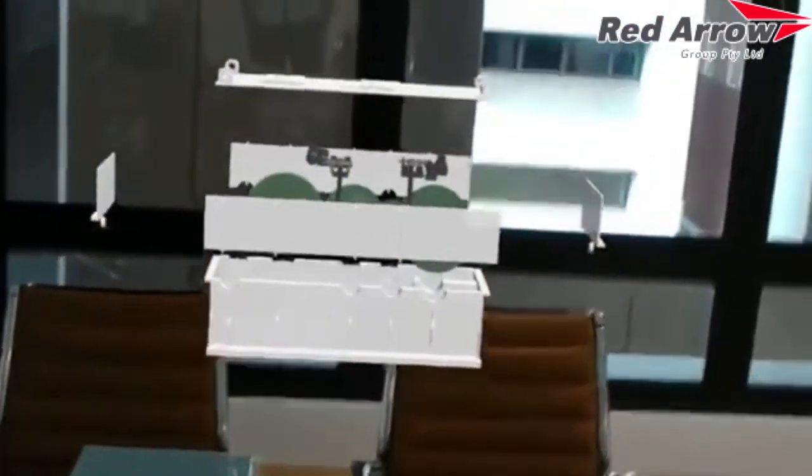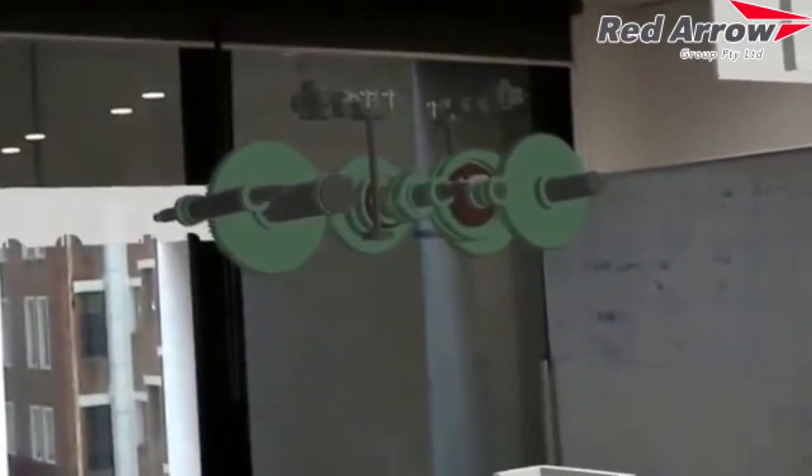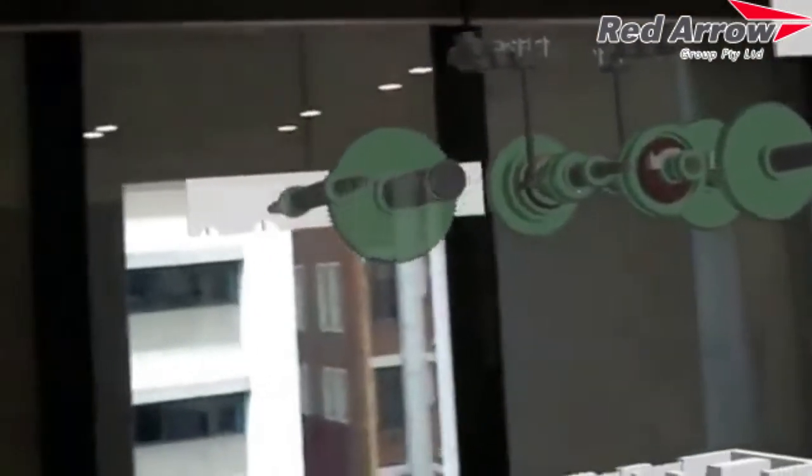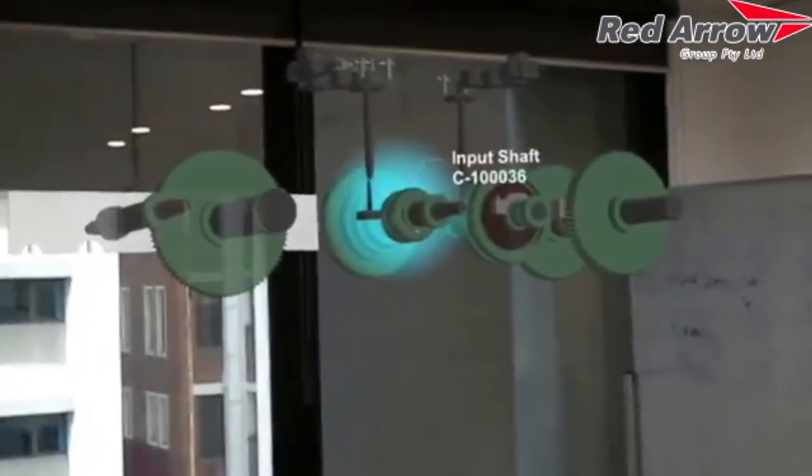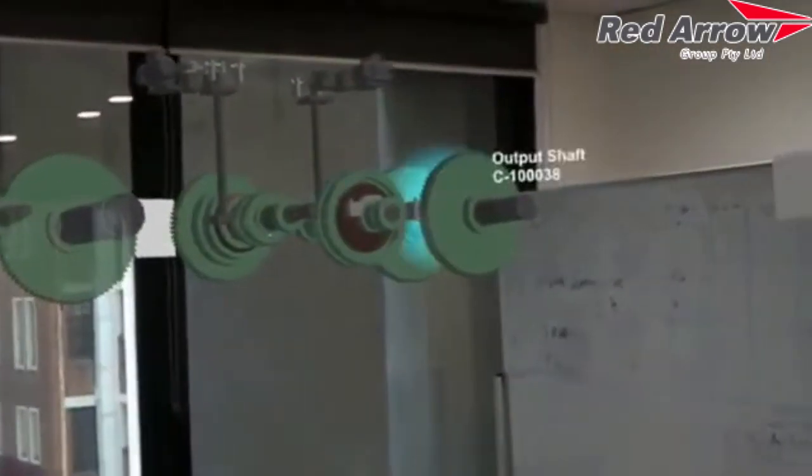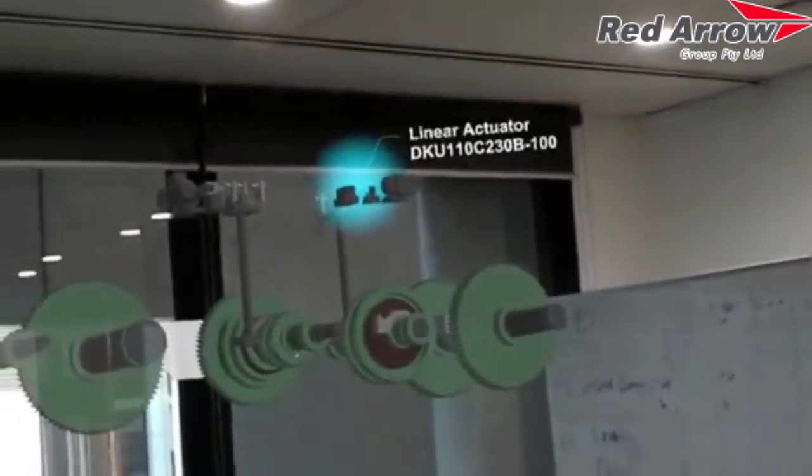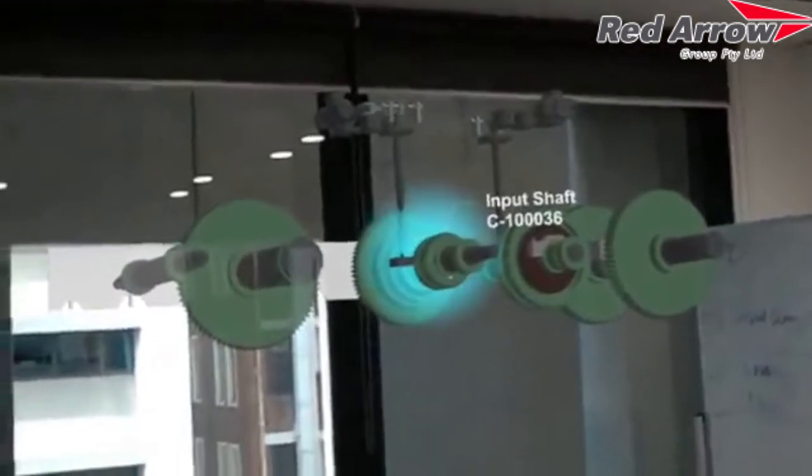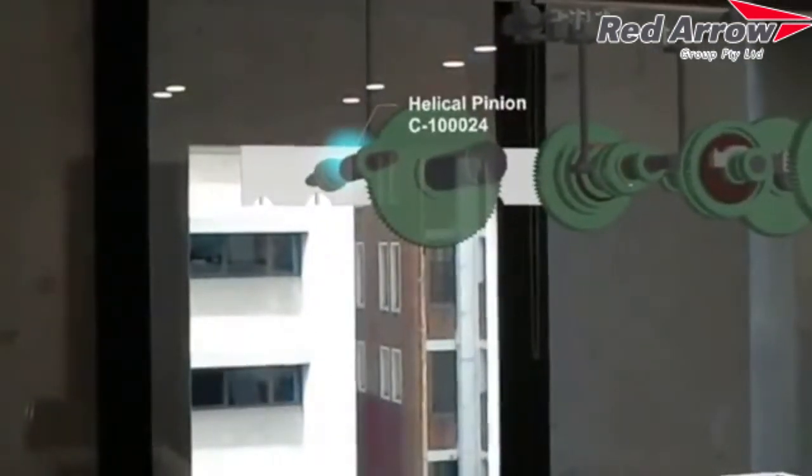We are now looking at the components of how that bridge gearbox is made up, from the gears, the shafts, and the actuators, and the pinions.